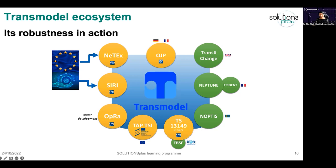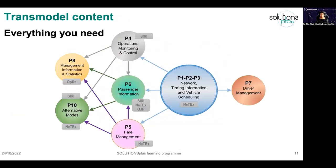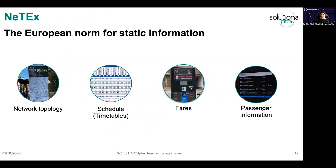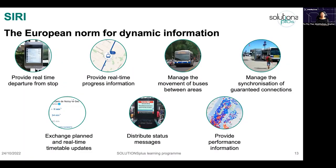Before we dive into NeTEx and SIRI, this is the content of Transmodel — it has everything you need. In each part of Transmodel's content, you have the data format it gave birth to: NeTEx and SIRI. NeTEx is the European norm for static information. You can describe the topology of the network, timetables or schedules, fares and pricing, and most importantly passenger information — the things you want to describe to all of your users.